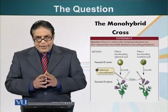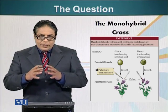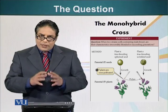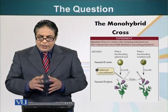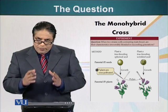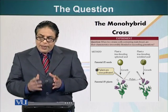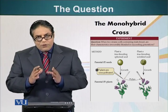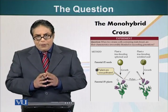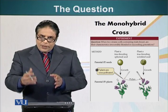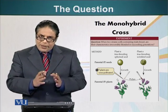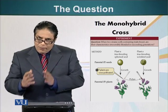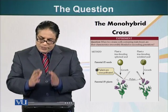The first experiment he did involved the shape of the seed. Mendel noticed that there were two types of seeds: a spherical shape and a wrinkled shape. Before he began his experiment, he wanted to ensure that the plants were true breeding. He crossed a plant with a specific trait with a plant of the same trait — for example, he crossed plants with spherical seeds with other plants with spherical seeds.